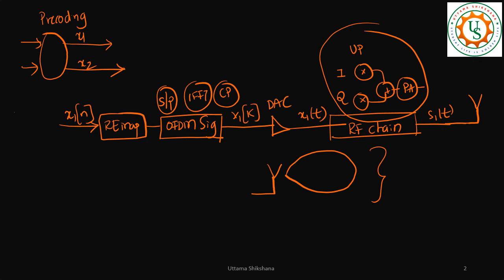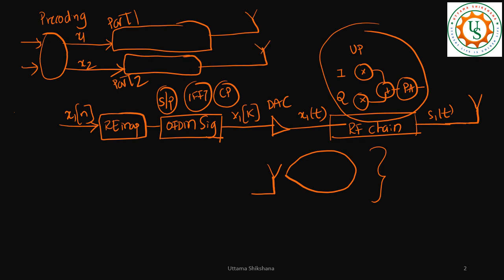Now we need to see what happens in the case of two antennas — port one and port two. This entire processing happens across both ports, with the output going to antenna one and antenna two. For now, let's say the pre-coding matrix is just ones, so we will have x1 across both ports. Finally both antenna outputs are s1(t) — the same signal across both physical antennas.